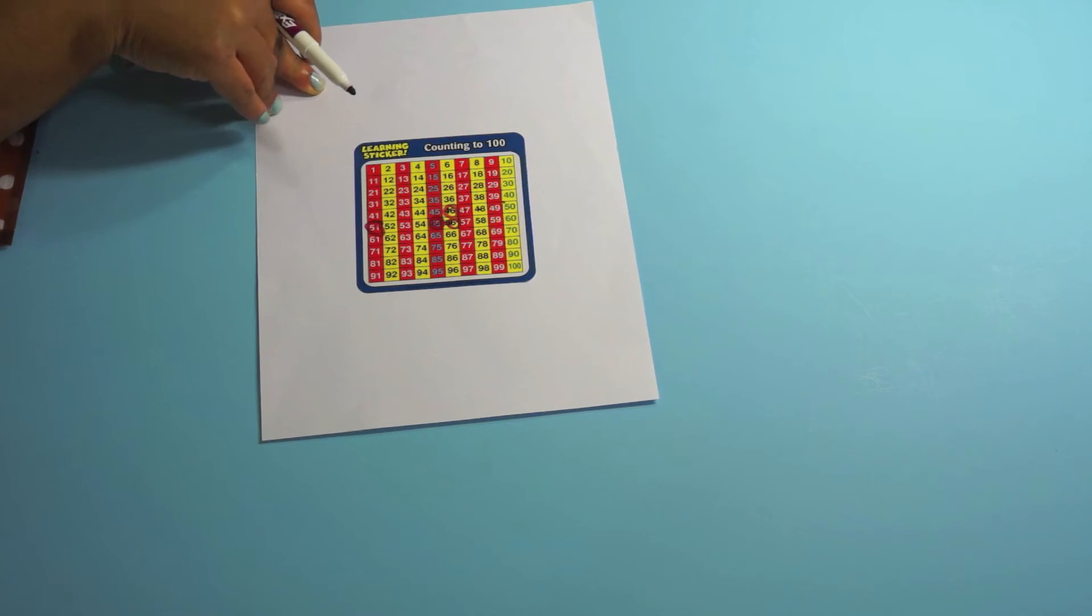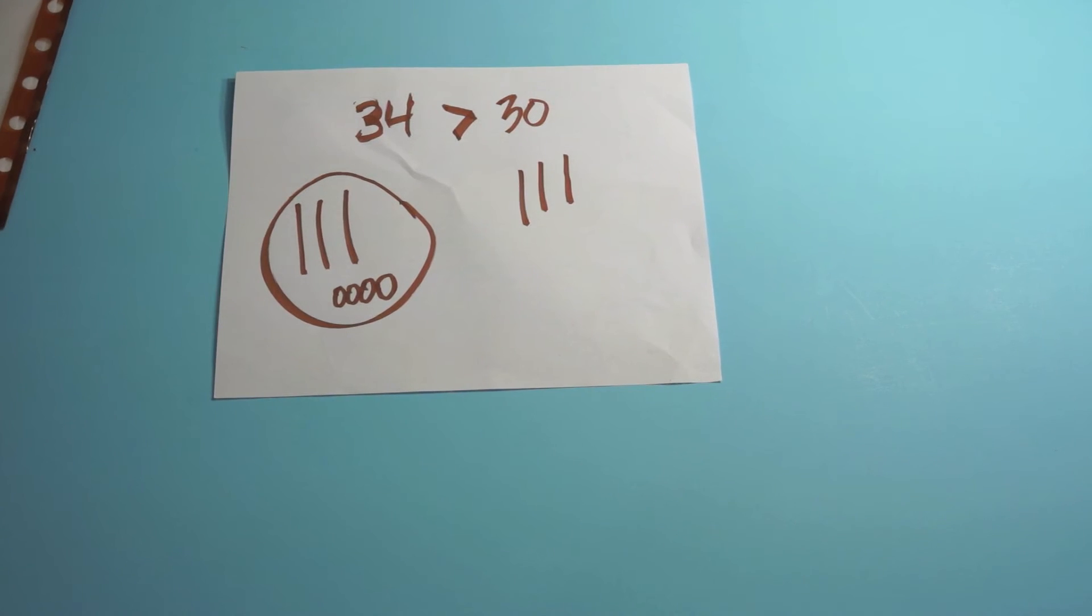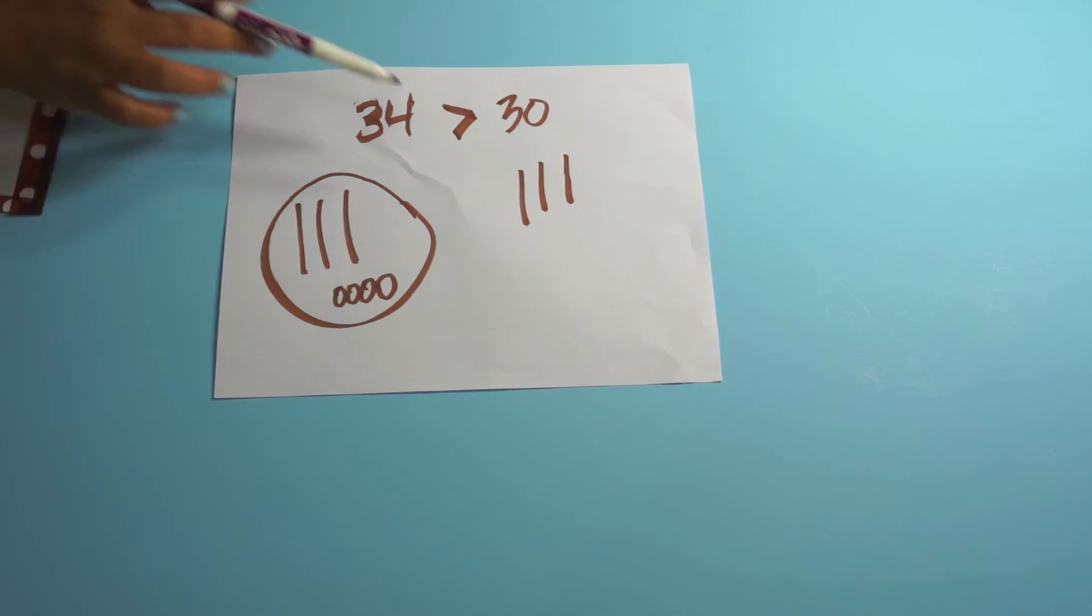And then also one of the critical areas is that kids can compare numbers. So you want them rolling two numbers and then being able to compare with the symbols and drawing it out. So I drew 34 and 30 and then I circle 30, 34 because it's greater than 30.